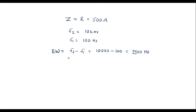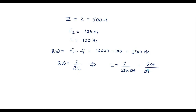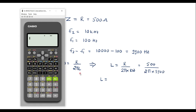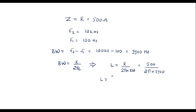Now, with the help of this bandwidth, I will calculate L. We know that bandwidth is equal to R divided by 2π L. So L is equal to R divided by 2π into bandwidth. That is, 500 divided by 2π into 9,900. So L equals 8.038 millihenry, that is 8.038 × 10⁻³ henry.